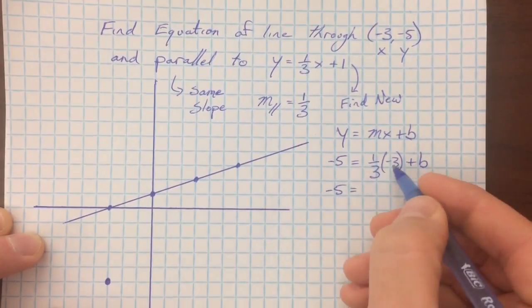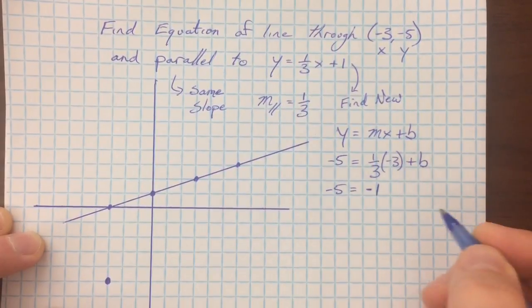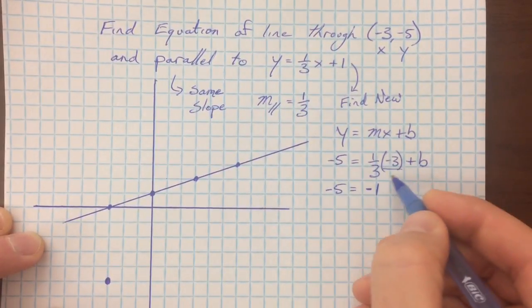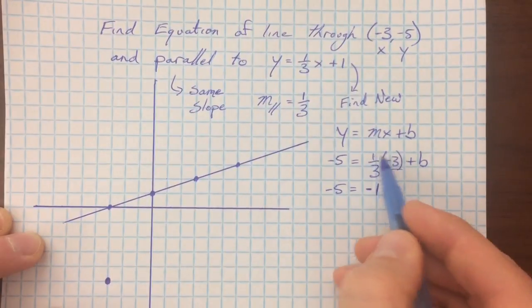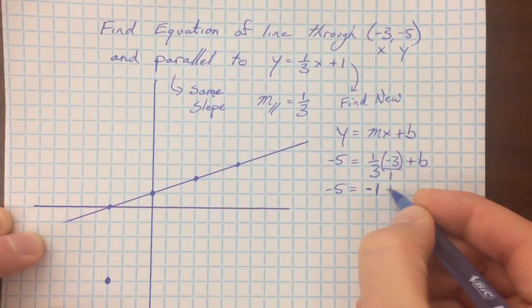So negative 5, 1/3 of 3 is just 1, and 1/3 of negative 3 is negative 1. If you also want to stick a 1 underneath this, you can multiply 1 times negative 3 and 3 times 1. Either way, it simplifies to negative 1.